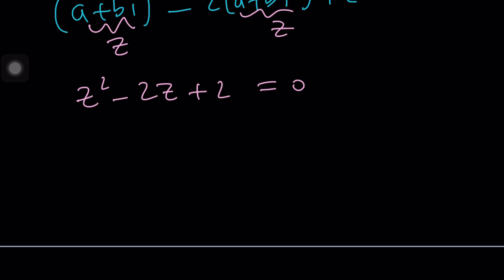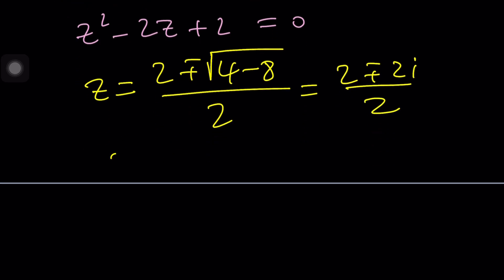Now how do you solve it with the quadratic formula? Negative b plus minus the square root of b squared which is 4 minus 4 times 2 which is 8. That's going to give us the negative square root of negative 4 which is 2i plus minus. So it's going to be 2 plus minus 2i divided by 2. Were you expecting this? I wasn't. Z equals 1 plus minus i.